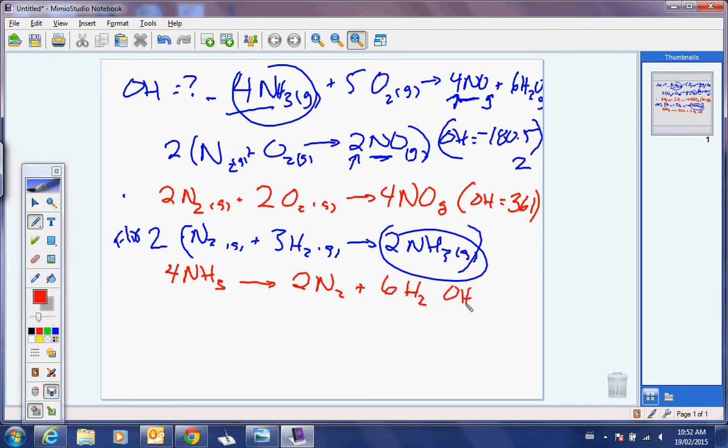4 NH3s yields 2N2s and 6H2s. And the delta H for that on the sheet is negative 91. So because I flipped it, it's now positive 91. And then you also multiplied it by 2. So it's now positive 182, 183.6. Is that right? Somebody help me get it out of my mouth? Good. Kilojoules per mole. Do you understand where I got that number from?